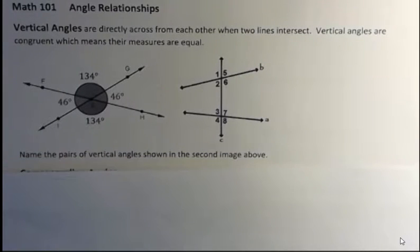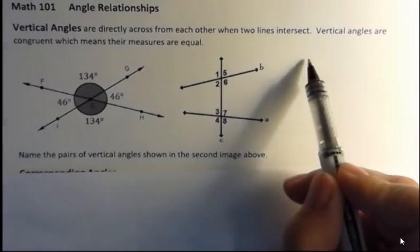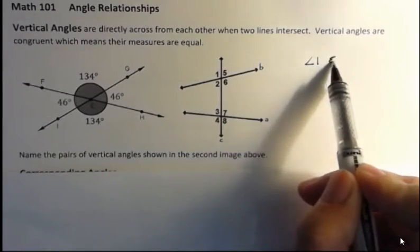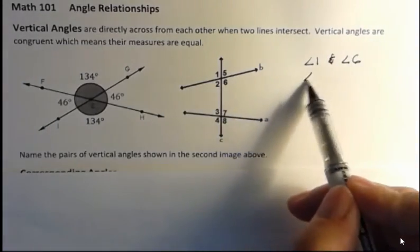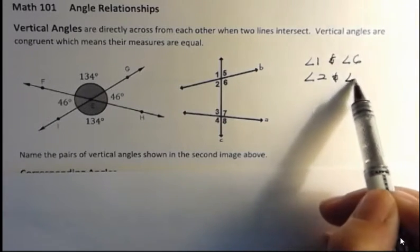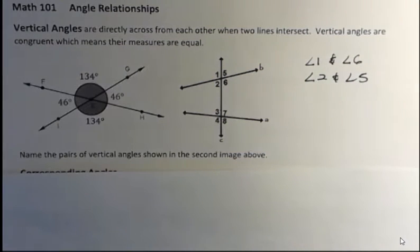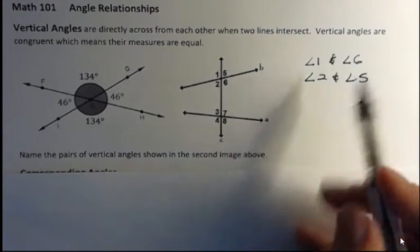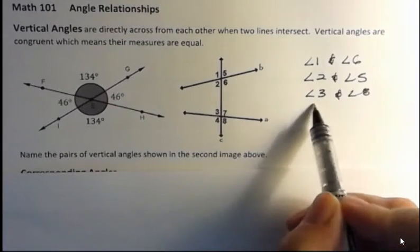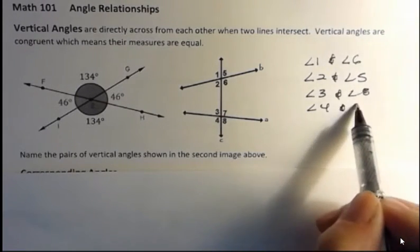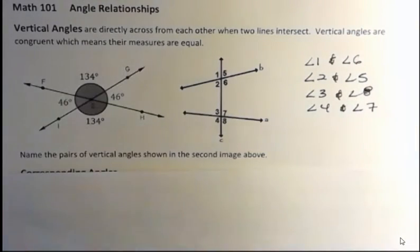But what are the vertical angles? Name the pairs of vertical angles shown in that second image. Well, I have angle one and angle six — these two are vertical angles. I also have two and five. Those are the vertical angles up top. Down below I have three and eight, and over here I have four and seven. Those are the vertical angles.